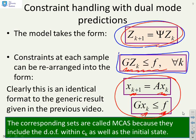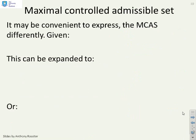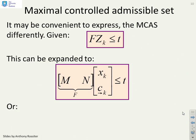Just a note: the corresponding sets are going to be called MCAS, not MAS, because they include within them the degrees of freedom ck. It's called the maximal controlled admissible set.